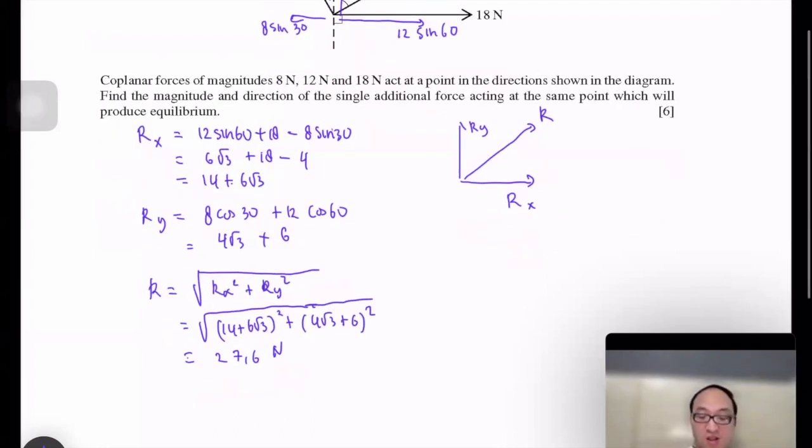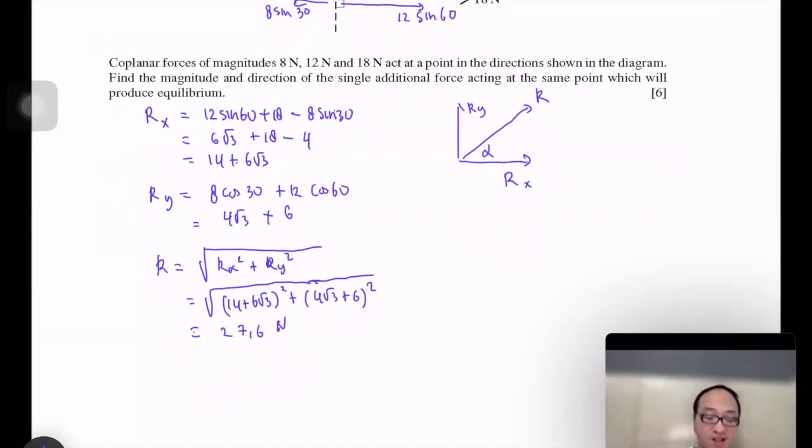Now, how about the angle? So the angle is tangent alpha equals to Ry divided by Rx. So it goes to 4 square root 3 plus 6 divided by 14 plus 6 square root 3. And this alpha is equal to 27.9 degrees.